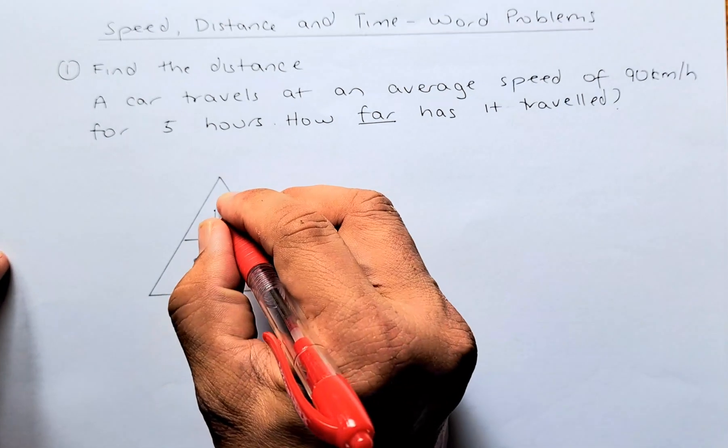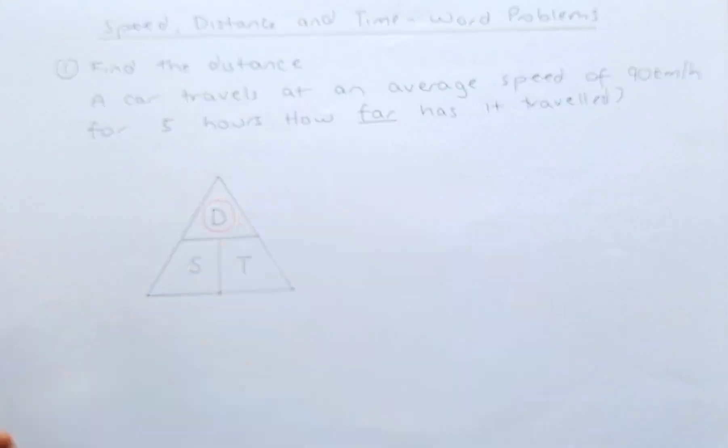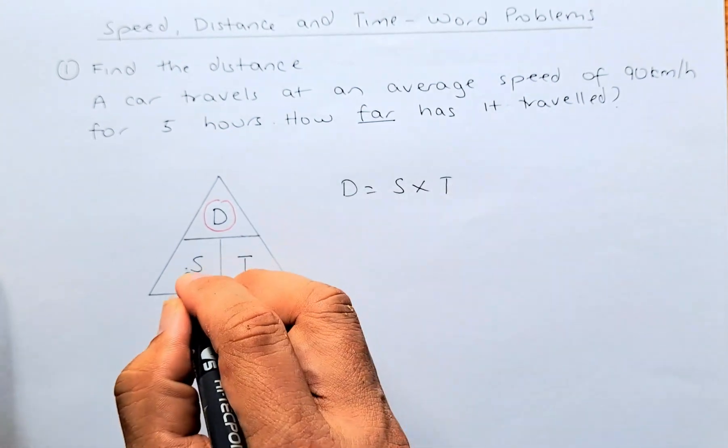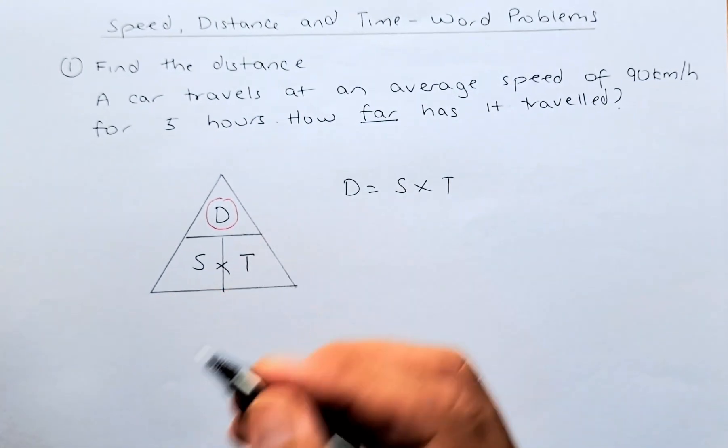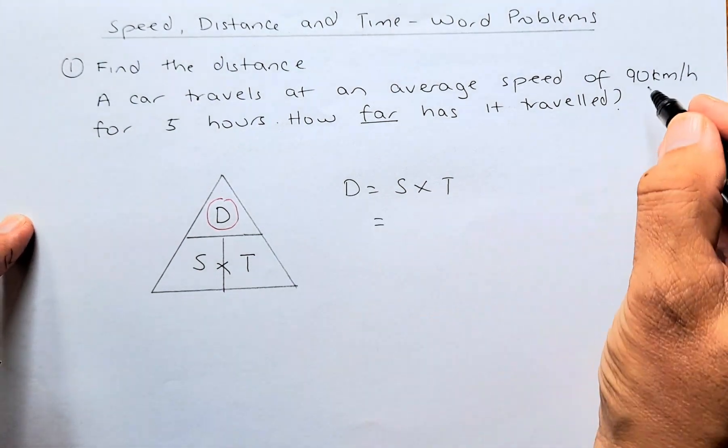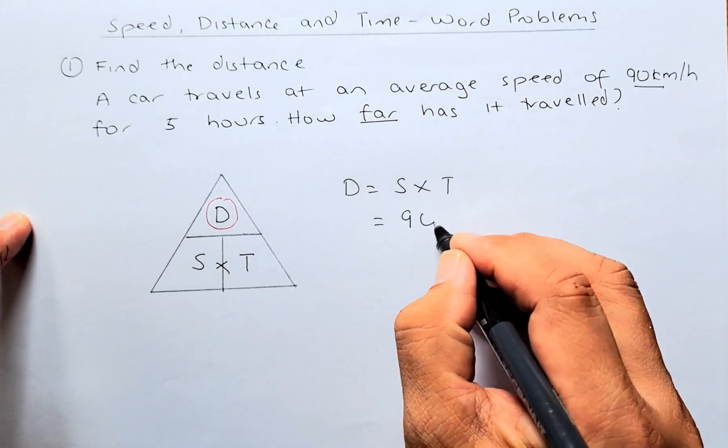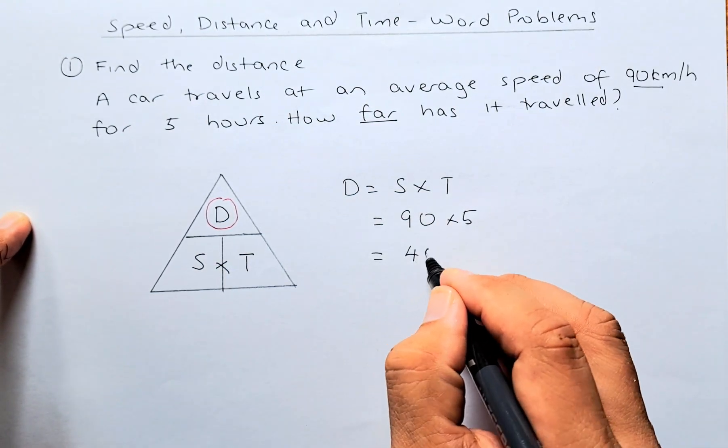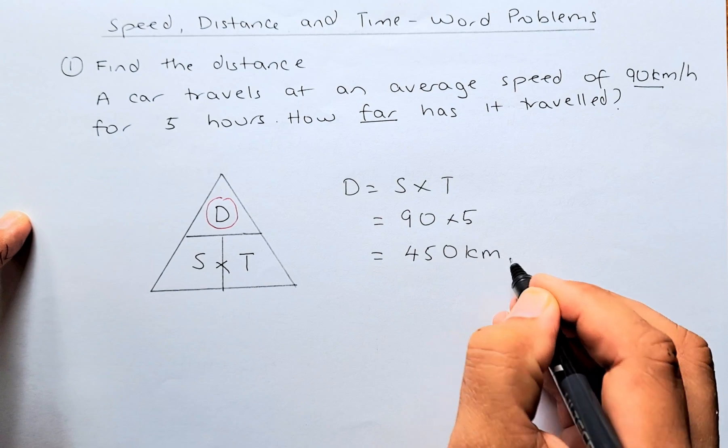To do that, we are going to circle D and the formula is going to be D equals speed times time because S and T are lining up side by side. The next step we are going to just substitute the numbers. From the question, the speed is 90 and the time is 5 hours and the distance will be 90 times 5 and that will be 450 km.